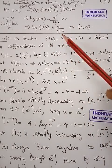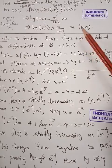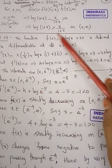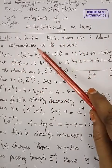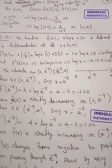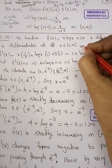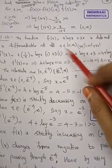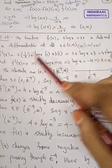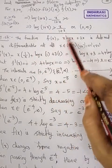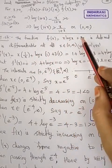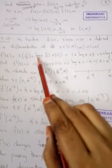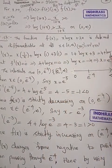Now f(x) is given as x·log(x) + 3x. We are going to find f'(x). Using the product rule — u·v differentiated gives u·v' + v·u' — differentiating x·log(x) gives x·(1/x) + log(x)·1, plus differentiating 3x gives 3. The x terms cancel, giving 1 + log(x) + 3, which equals 4 + log(x).